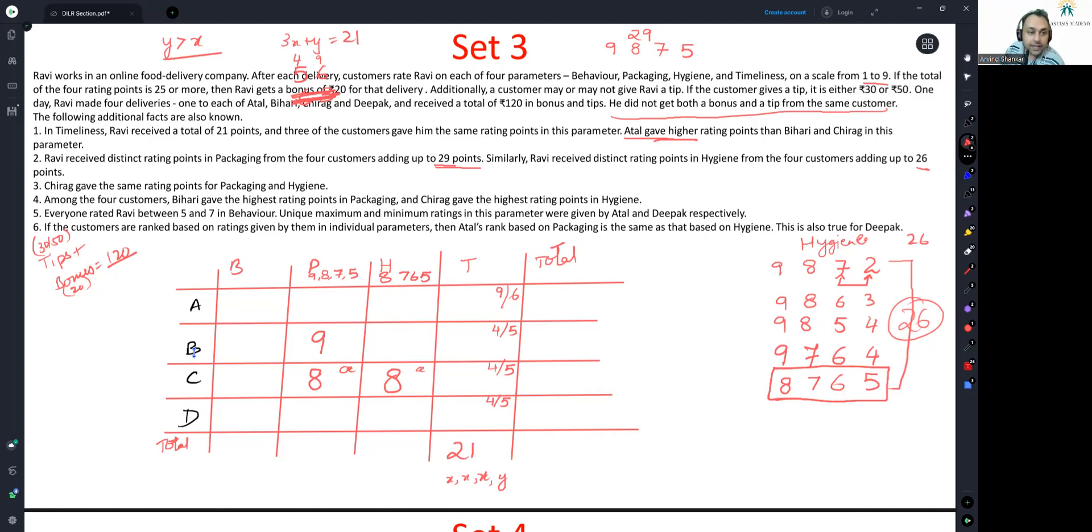Next, everyone rated Ravi between 5 and 7 in behavior. Unique maximum and minimum ratings on this parameter were given by Atal and Deepak respectively. So you have only 3 scores available. And unique maximum was given by Atal, so Atal definitely gave 7. And unique minimum was given by Deepak, so he definitely gave 5. So the two people in between have to give 6s only. This is also uniquely identified.